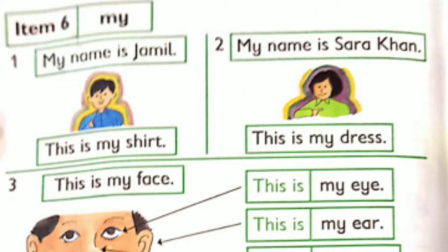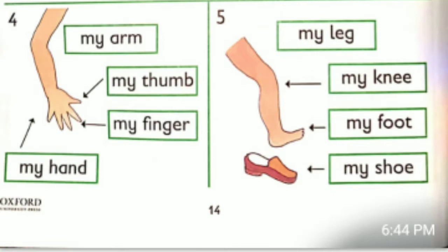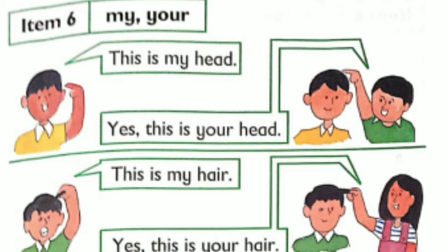Item 5 — My. My name is Jamil. My name is Sarah Khan. This is my shirt. This is my dress. This is my face. This is my eye. This is my ear. This is my nose. This is my lip. This is my tooth. This is my mouth. This is my tongue. My arm, my thumb, my finger, my hand, my leg, my knee, my foot, my shoe, my ear. This is my head. This is my hair.